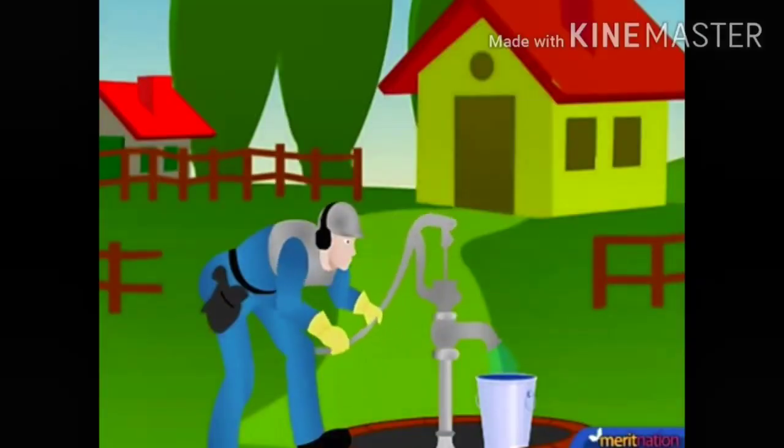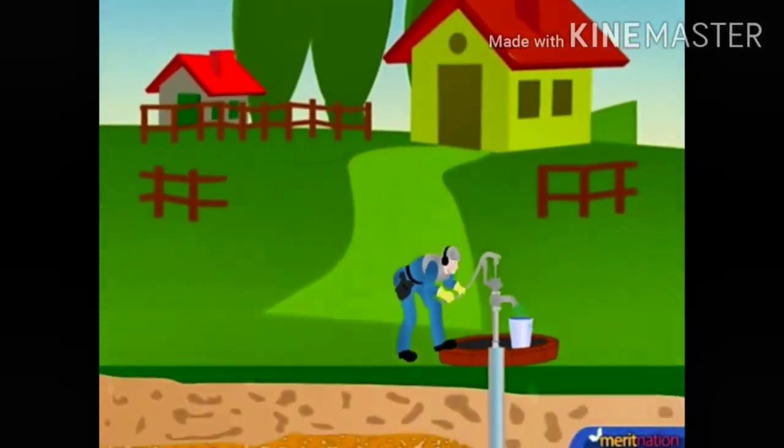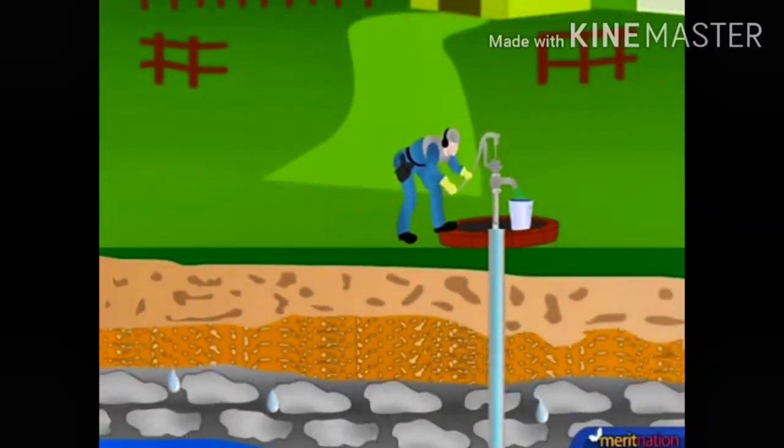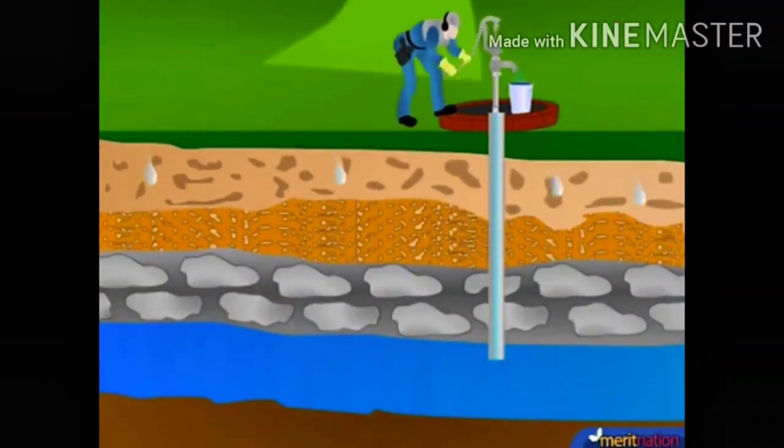Ground water comes from rain. Rain water flows down hills and slopes. Some of it fills up ponds, lakes and rivers. From rivers, it flows into the sea. Some of it soaks through the soil and reaches underground. The water stored underground is called ground water.